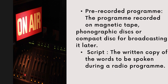Programs are of two types. Live programs or live broadcasting is one type. Then pre-recorded programs are also there. Pre-recorded programs means the program is being recorded on magnetic tape, phonographic disc, or compact disc, and they are broadcast later. This process is known as pre-recording. In radio, normally pre-recorded programs are available or broadcasting.